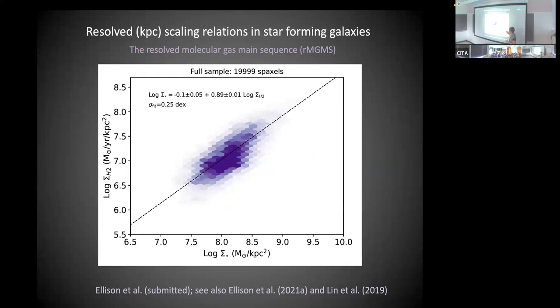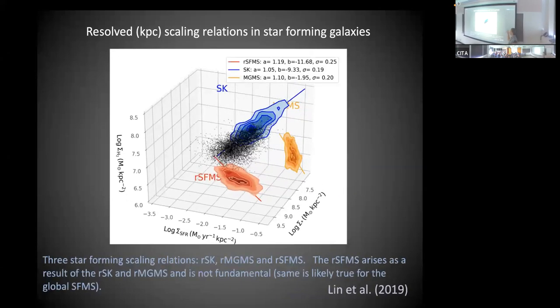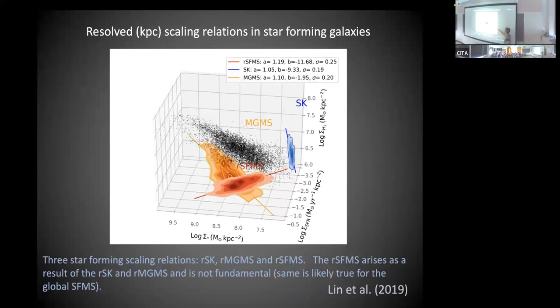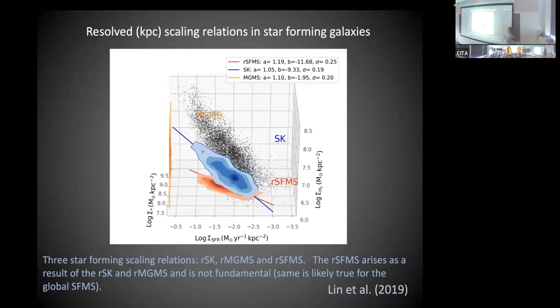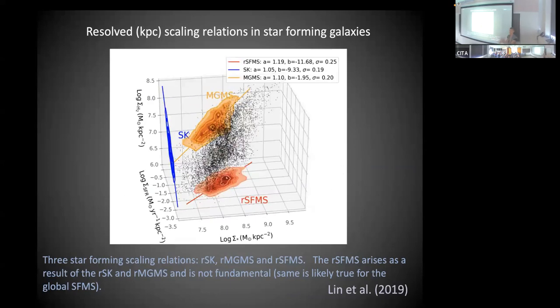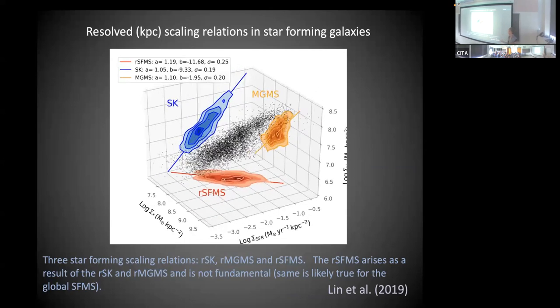The third way you can combine these quantities hasn't been looked at very much in the past - how the gas traces the stellar mass. Because this hadn't appeared in the literature before, we had to make up a name for it. We call this the resolved molecular gas main sequence. Again, you can see a nice tight correlation between these quantities. Given that all three scale with one another, it shouldn't come as any surprise to see that you can render them in a three-dimensional way. The individual black points are the individual spaxels. You can project those onto two-dimensional planes that give you those three different scaling relations.